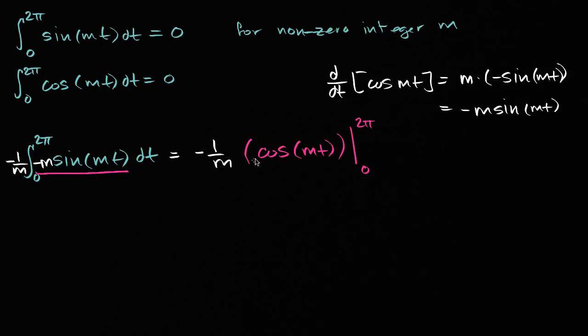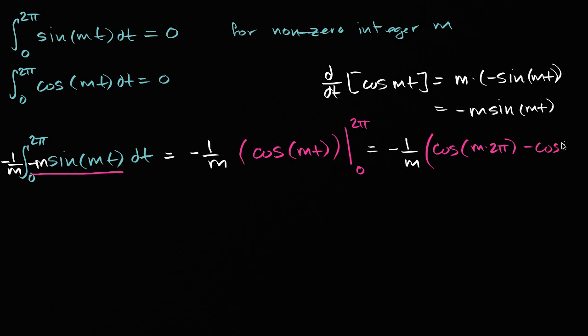And so this is going to be equal to negative one over m times cosine of m times two pi—let me write it this way—cosine of m times two pi minus cosine of, well, it's gonna be m times zero, which we could just write as zero.